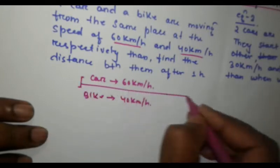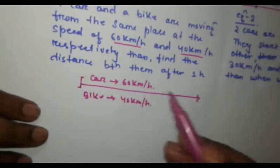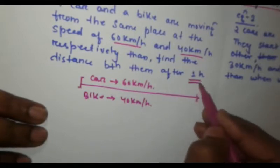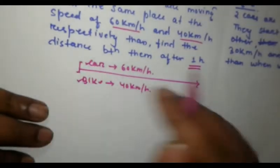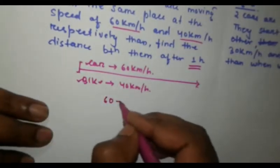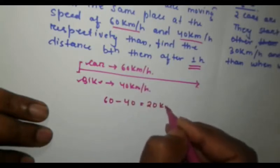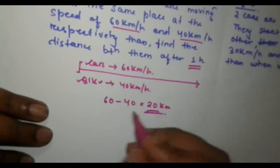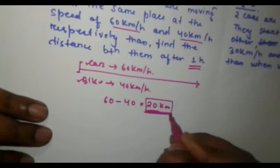They are moving in the same direction. So, the question is asked that after one hour, what will be the distance between car and bike? As they are moving towards the same direction, the relative speed would be 60 minus 40 is equal to 20 km. So, after one hour, the distance would be 20 km.